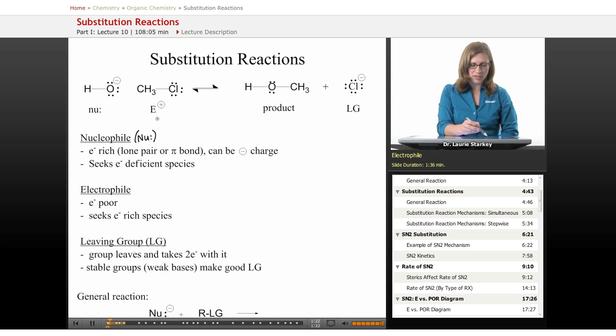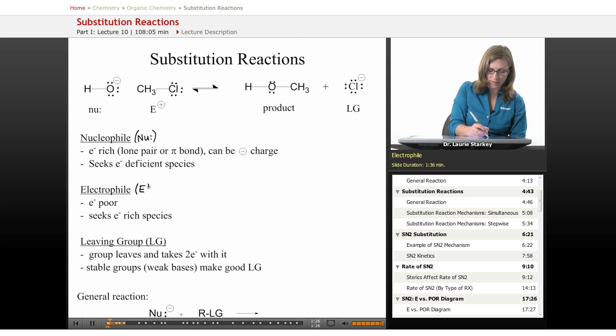The next part in this reaction is described as the electrophile. A very handy abbreviation for electrophile is E+. That tells us something about the species, because electrophiles are things that are electron poor.